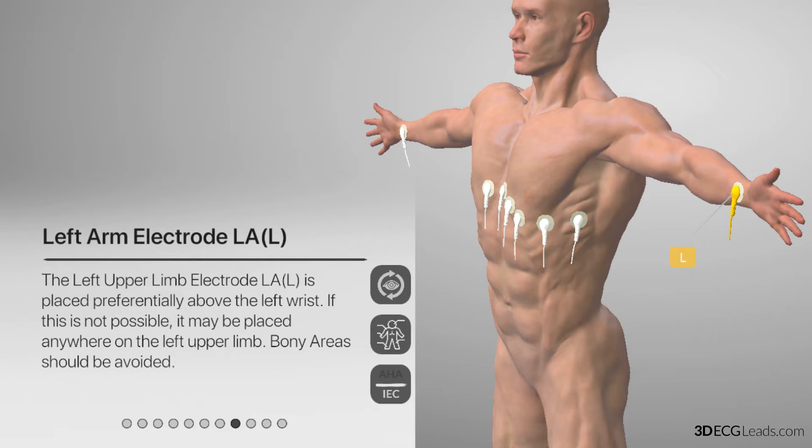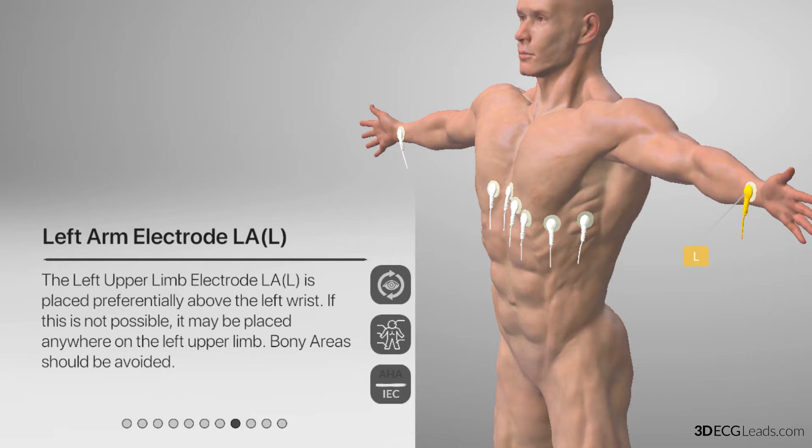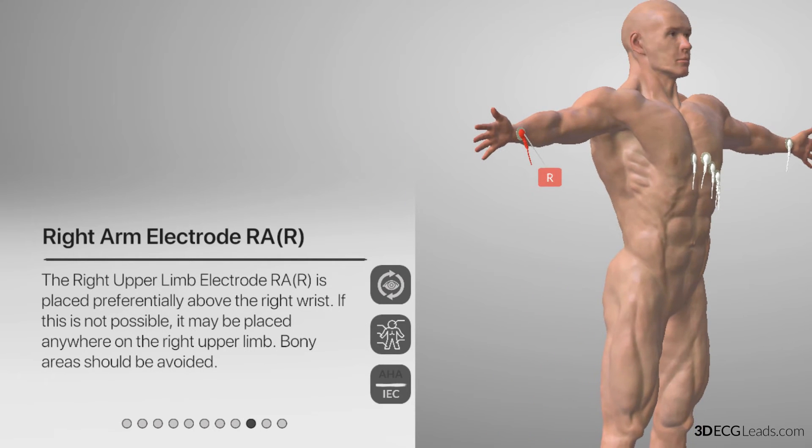Now you will find the left arm lead is named L, and is yellow in color, instead of black. The right arm lead is named R, and is red in color, instead of white.